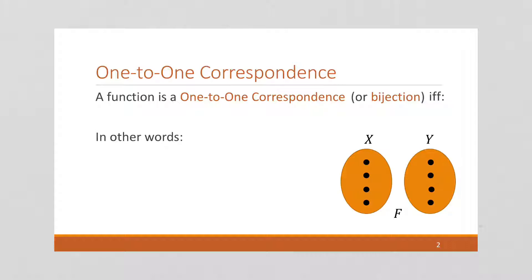So a one-to-one correspondence is a function that is a one-to-one correspondence if and only if it is both one-to-one and onto.